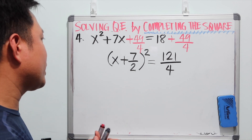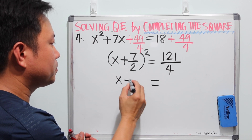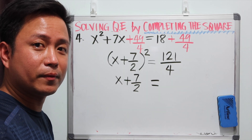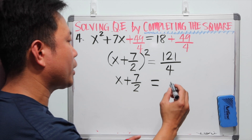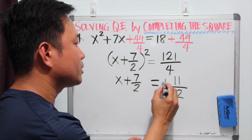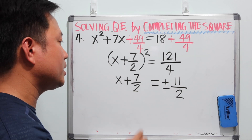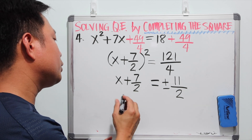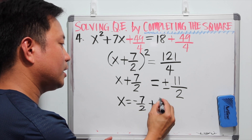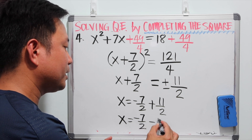The next step is to get the square root of both sides. When we do that, we get x plus 7 over 2 equals plus or minus 11 over 2, since the square root of 121 is 11 and the square root of 4 is 2. Don't forget there's always a positive and negative for the square root. Solving for the two x values, we have x equal to negative 7 over 2 plus 11 over 2, and the other is negative 7 over 2 minus 11 over 2.